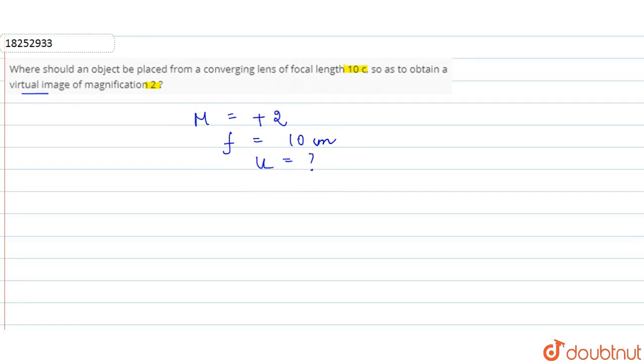In this case, we can use the formula for magnification. Magnification is equal to minus v upon u. So M is 2, equals minus v upon u. And we can say that v is minus 2u.